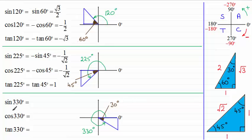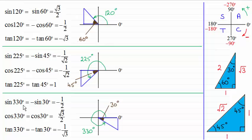Working out sine, cosine and tan of 330 degrees is the same as working off 30 degrees using the 30-60-90 triangle. The only thing to remember is that cosine is the positive one in the fourth quadrant — both sine and tangent are negative. So: sine of 330 equals minus sine 30, which is minus one half; cosine of 330 equals cosine 30, which is root 3 over 2; and tan of 330 equals minus tan 30, which is minus 1 over root 3.